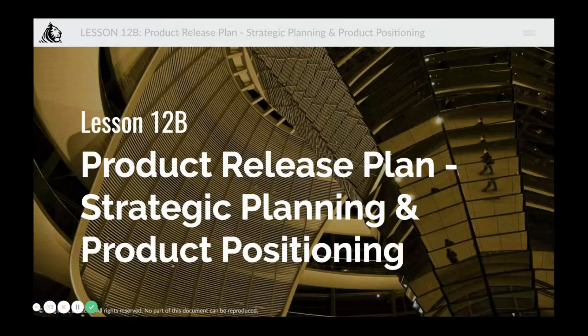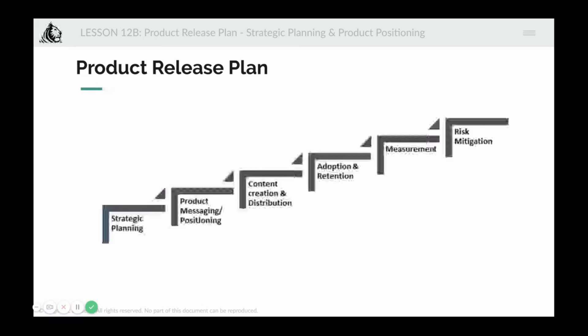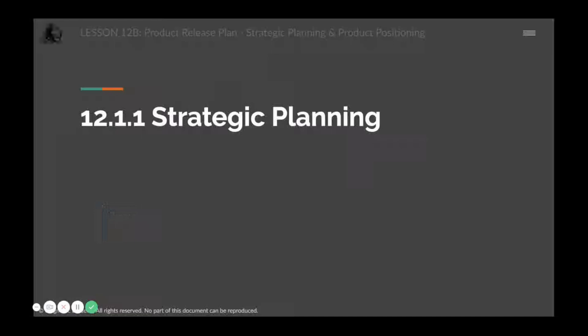In this unit we're going to talk about strategic planning and product positioning. When you're preparing for a product release, there are six steps to go through. You start with strategic planning, which has typically already started when you designed your sprint, release, or epic. Then you look at product messaging and positioning, figure out content creation and distribution, ensure strong adoption and retention, measure that adoption and retention, and finally handle risk mitigation. In this lesson we'll cover the first two steps.